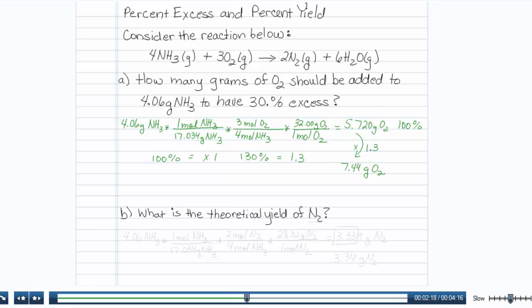The next question says, what is the theoretical yield of N2? We need to go back to our original values. 4.06 grams of NH3 is what we have, and it's our limiting reagent.